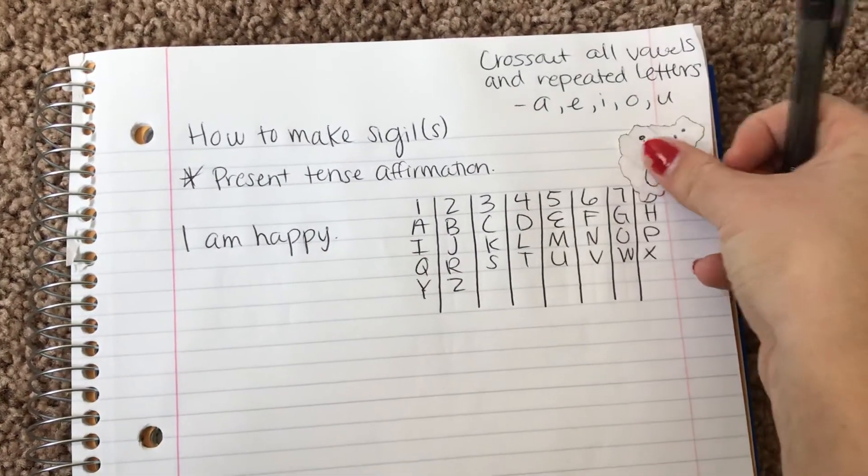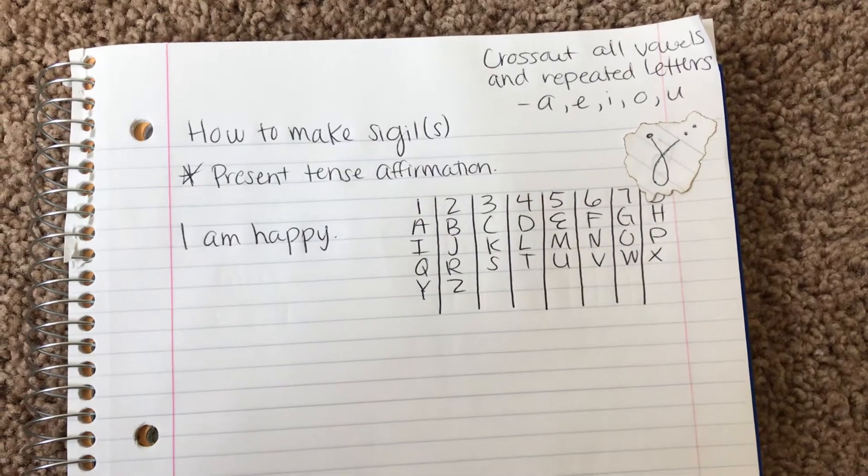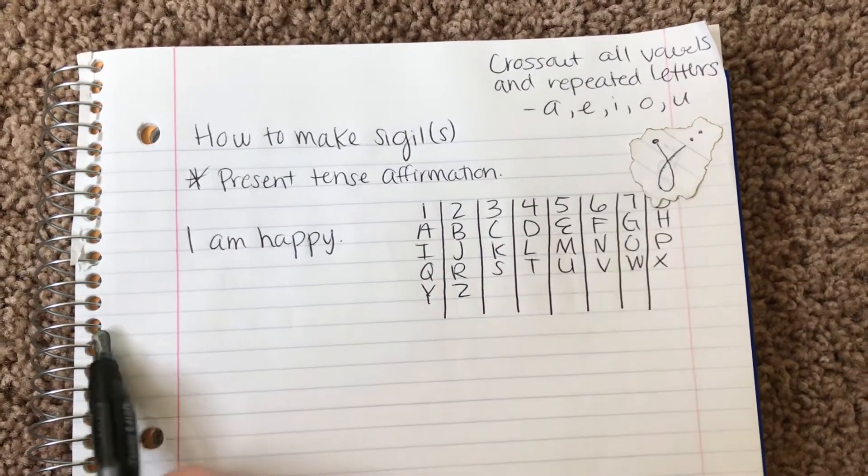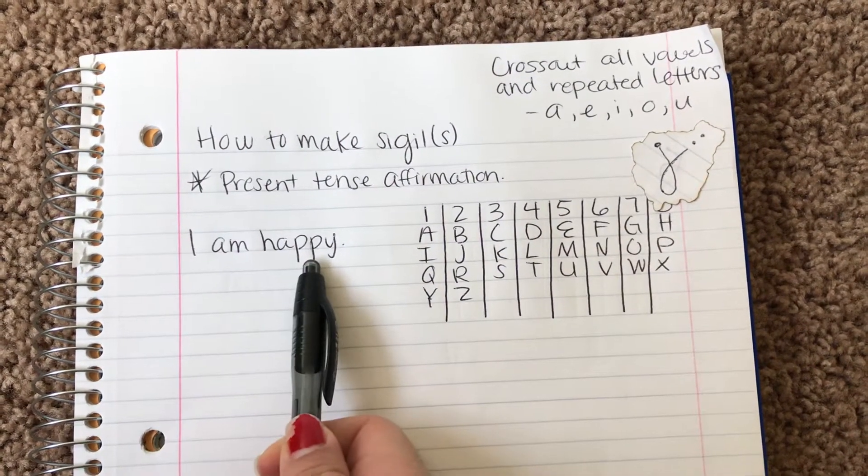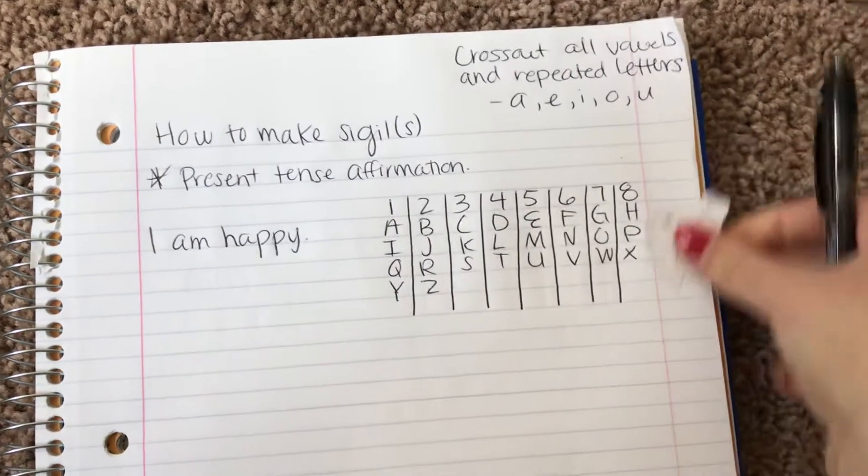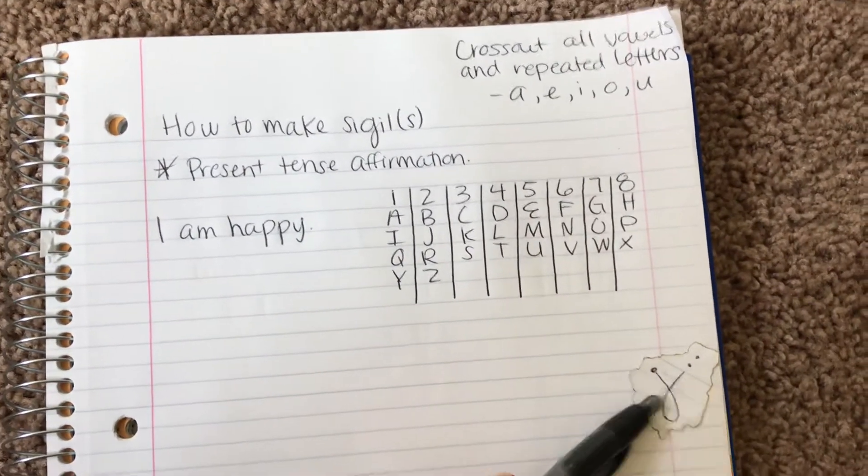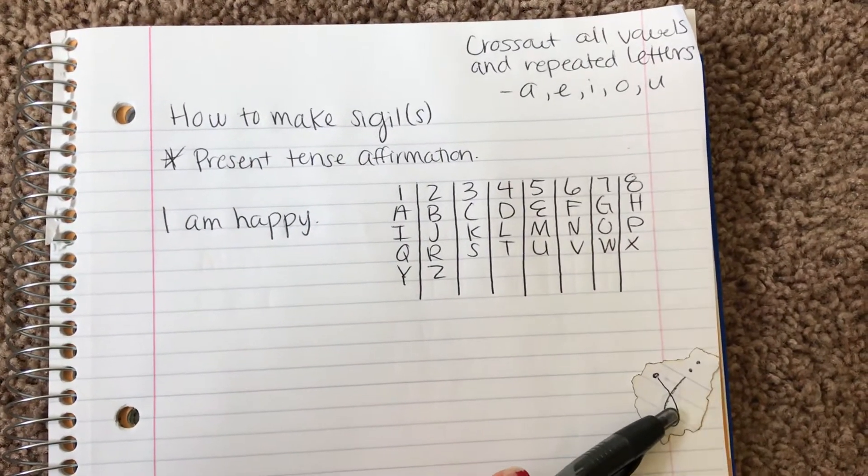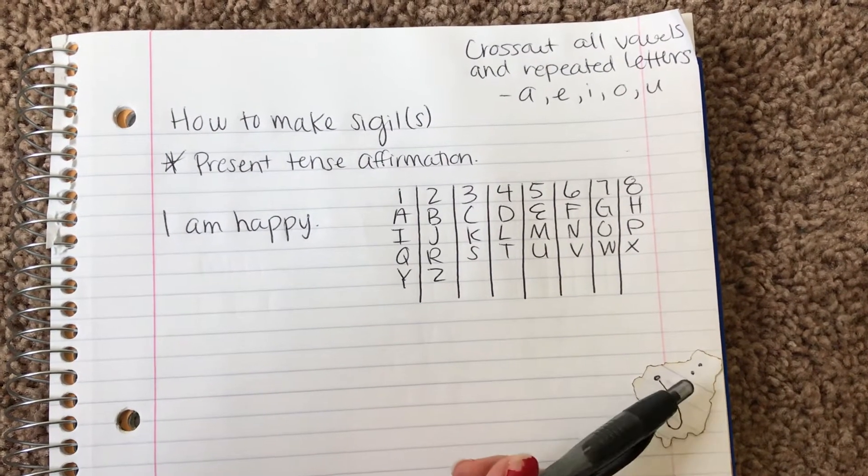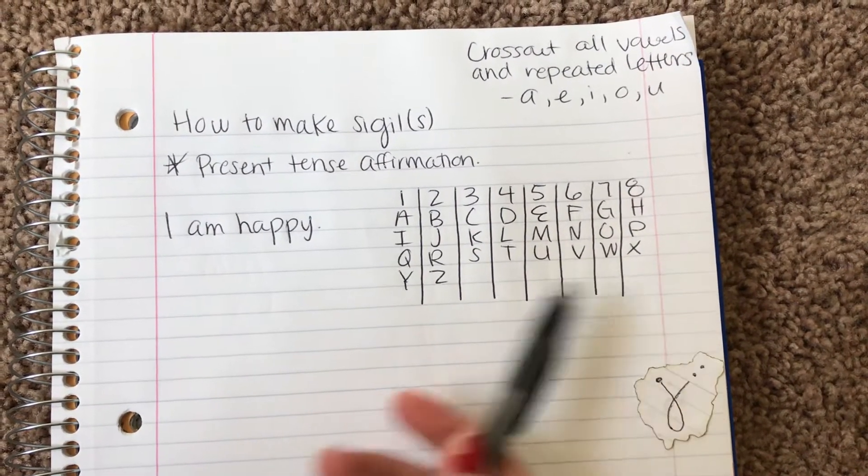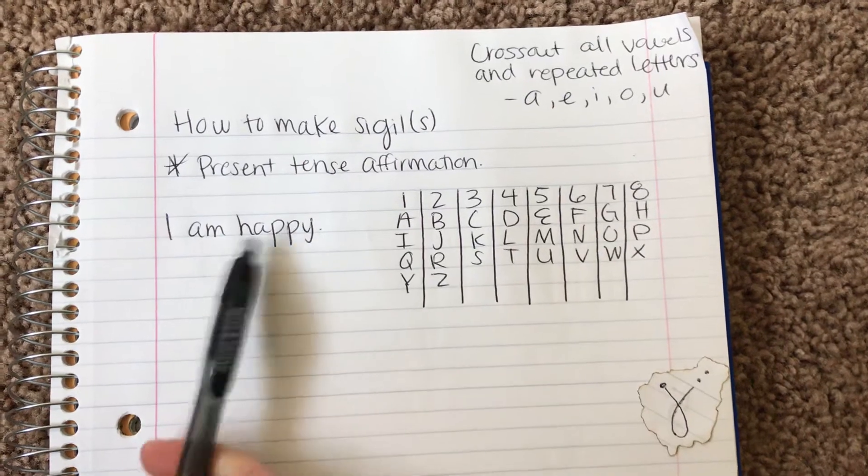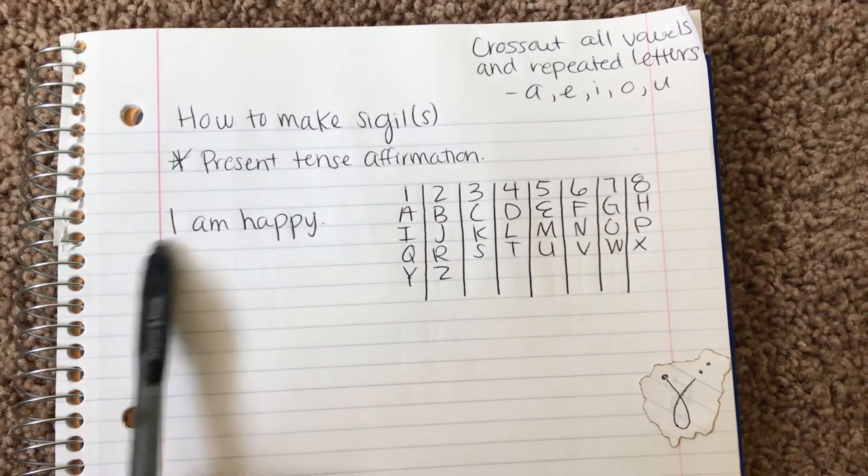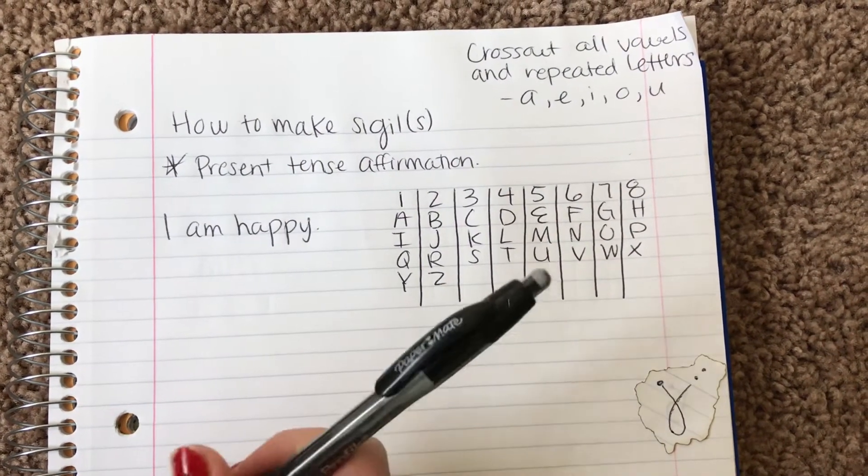So it's going to end up looking like this. But it's a symbol and basically holds a vibration of whatever your intention is. And this you can use it like if you do candle work or just in general, if you want to have it in your space, if you want to carry it with you. Whatever affirmation you want to do, make sure it's in the present tense.